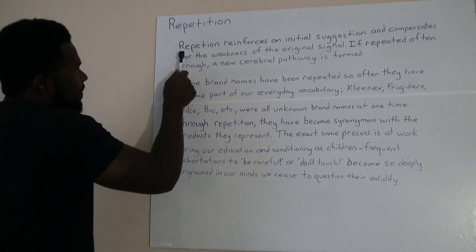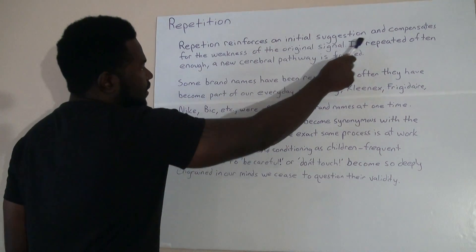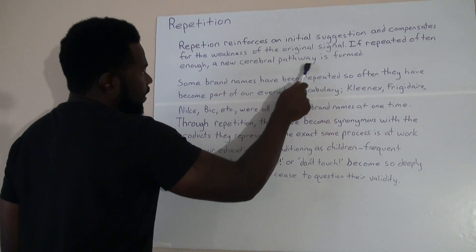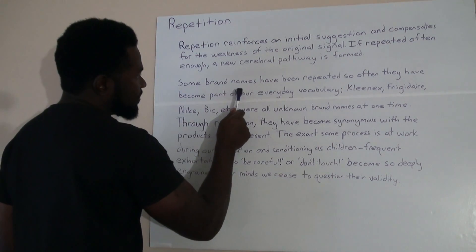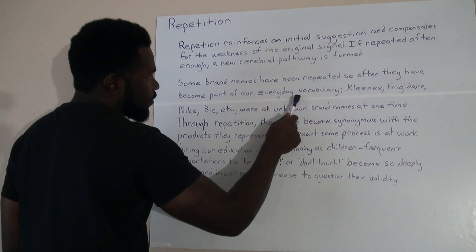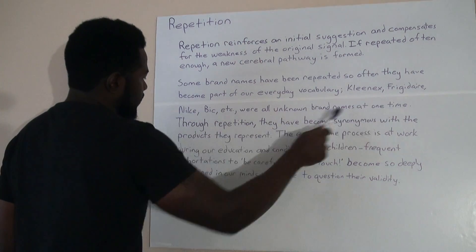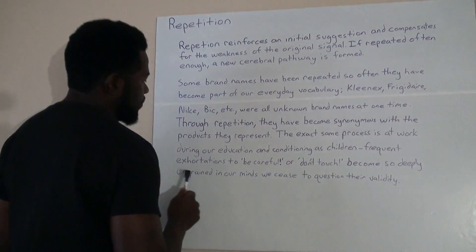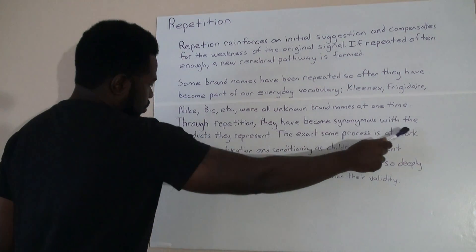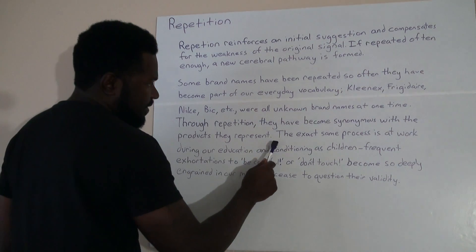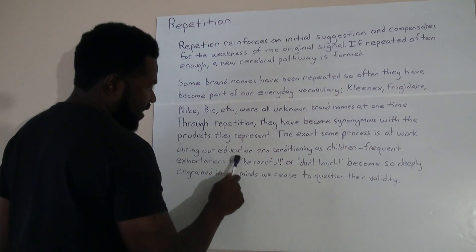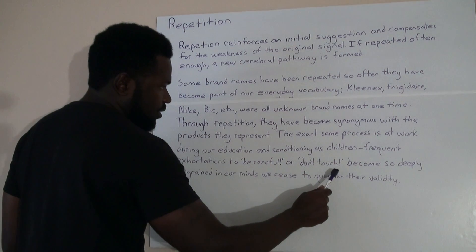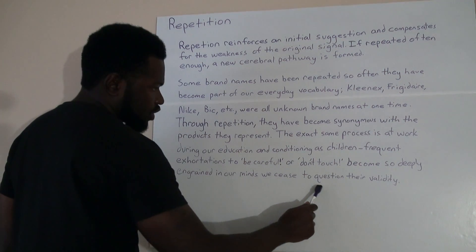Repetition reinforces an initial suggestion and compensates for the weakness of the original signal. If repeated often enough, a new cerebral pathway is formed. Some brand names have been repeated so often they have become part of our everyday vocabulary — Kleenex, Frigidaire, Nike, Bic — were all unknown brand names at one time. Through repetition, they have become synonymous with the products they represent. The exact same process is at work during our education and conditioning as children. Frequent exhortations to be careful or don't touch become so deeply ingrained in our minds, we cease to question their validity.